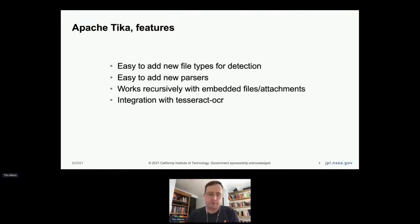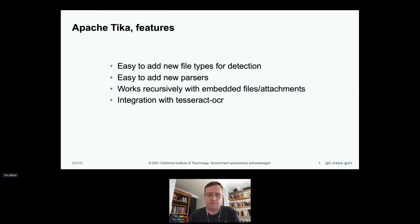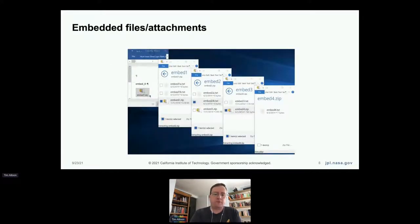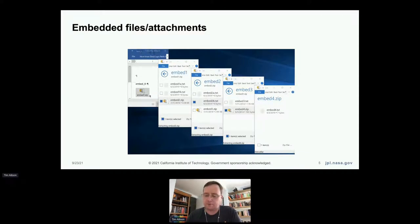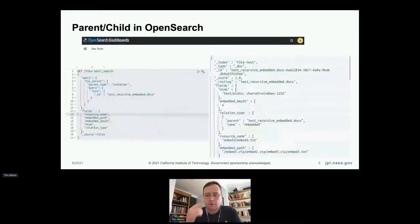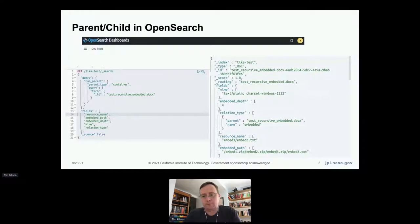We also have an integration with Tesseract OCR, so even for images or image-only PDFs, we'll fire off Tesseract so you can get some text out — not perfect, but pretty good. As an example of embedded attachments, I have actually seen these in the wild: you can stick a zip file inside a zip file inside a zip file and then throw that into a Microsoft Word document. The ideal output would be some kind of parent-child or flattened view of that in OpenSearch, Solr, or Elasticsearch.